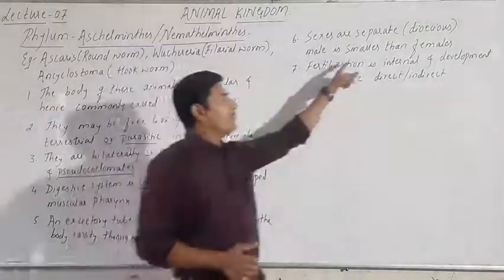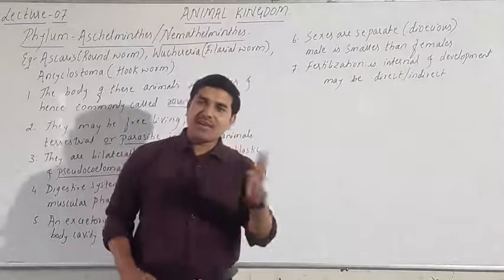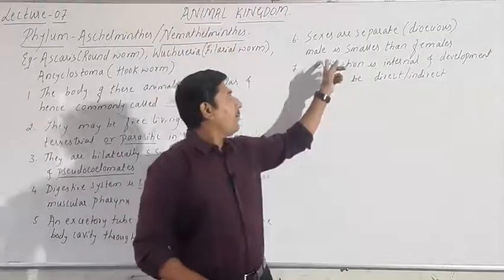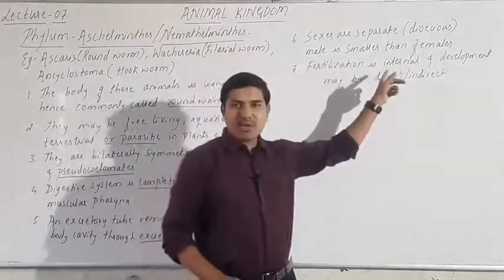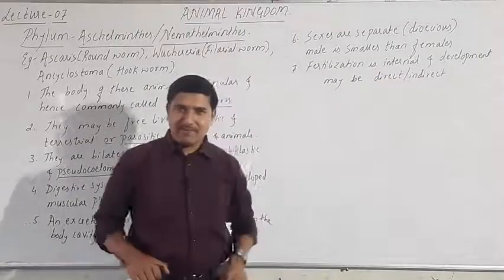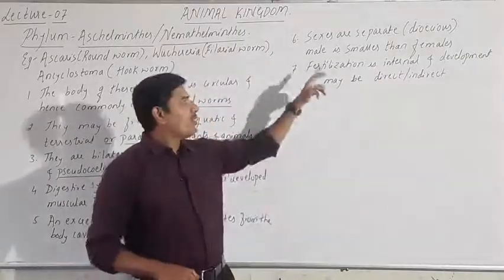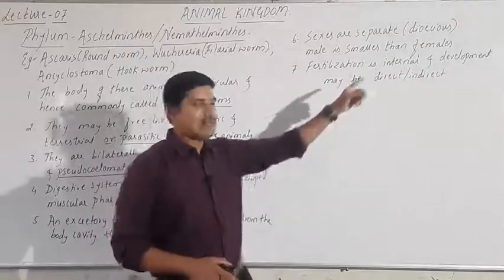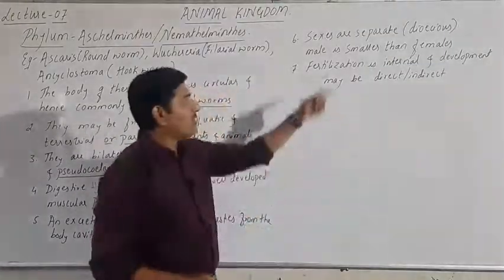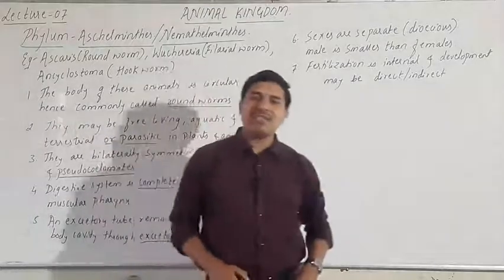Sexes are separate — that means they are dioecious. Male and female animals are different. Males are smaller and females are longer. That is why we call such animals dioecious.